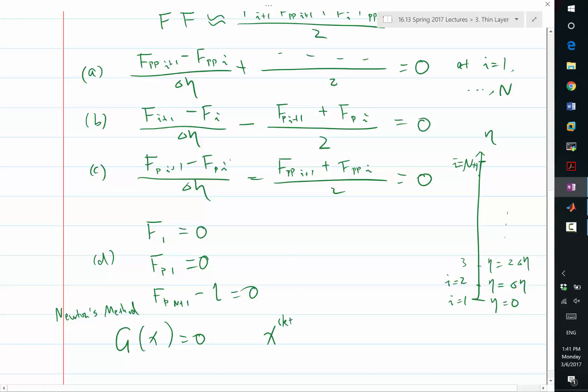x of k plus 1, the k plus 1 iteration, if k is equal to 0, that's my first better approximation, is equal to x_k minus, this is a matrix, partial g partial x inverse, times g of x_k.